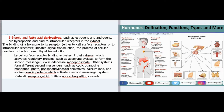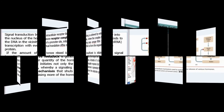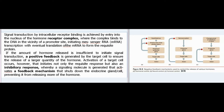G proteins activate a second messenger system. Catalytic receptors initiate a phosphorylation cascade. Signal transduction by intracellular receptor binding is achieved by entry into the nucleus of the hormone-receptor complex, where the complex binds to the DNA in the vicinity of a promoter site, initiating messenger RNA (mRNA) transcription with eventual translation of mRNA to form the requisite protein.